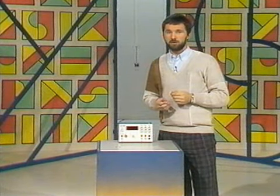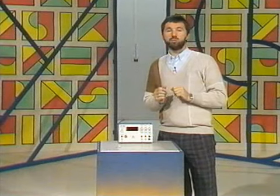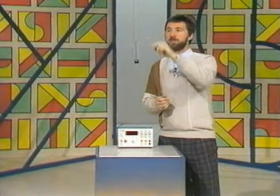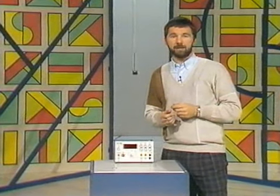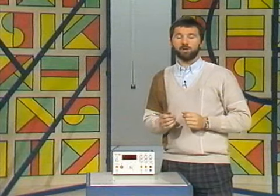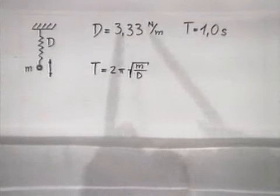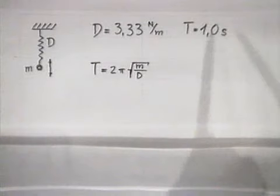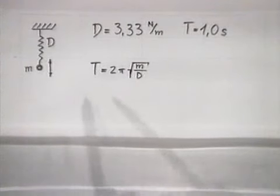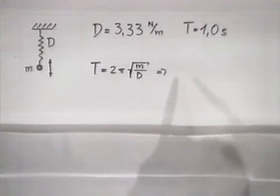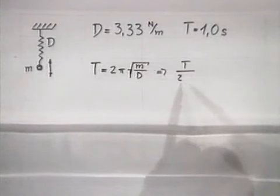Wir wollen jetzt damit eine Uhr konstruieren, und zwar den prinzipiellen Kern einer Uhr, die sogenannte Unruhe. Wir haben hier eine Feder mit der Federhärte 3,33 Newton pro Meter und wir wollen eine Uhr mit einer Periodendauer von einer Sekunde. Wir wollen also wissen, welche Masse wir anhängen müssen, um das zu erreichen. Dazu verwenden wir die bekannte Formel. Bekannt ist die Federkonstante mit 3,33 N/m und die erwartete Periodendauer von 1,0 Sekunden. Ich forme die Gleichung nach der Masse um und bringe zuerst 2π auf die andere Seite, dann quadriere ich beide Seiten.